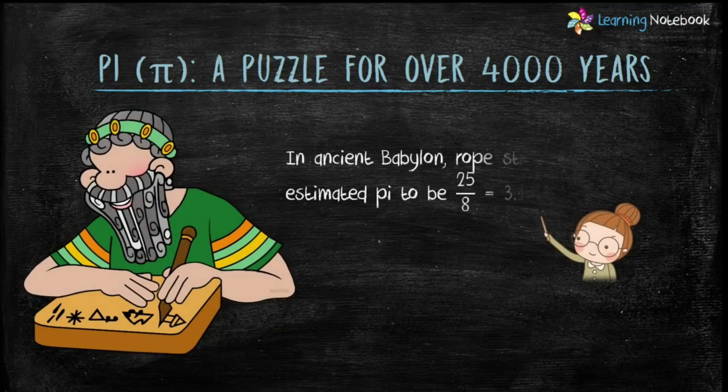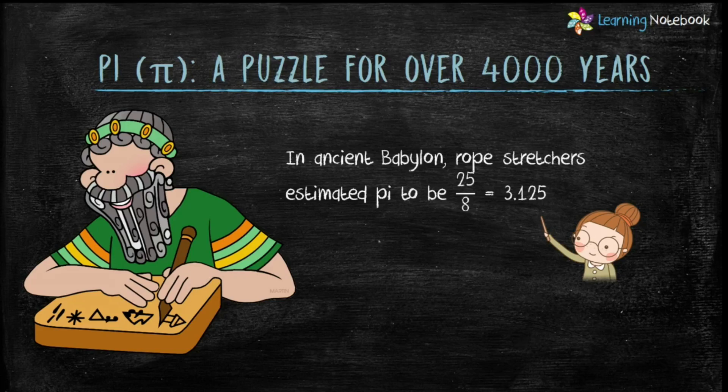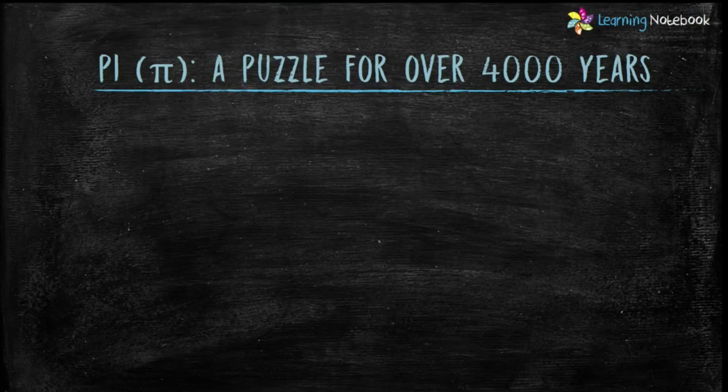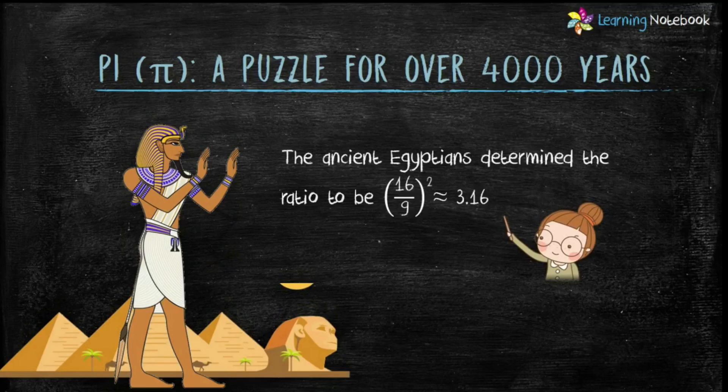Now let's see few milestones in the life of pi. In ancient Babylon, rope stretchers estimated pi to be 25/8 which equals 3.125. The ancient Egyptians determined the ratio to be (16/9)² which is approximately 3.16.